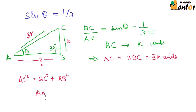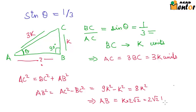So here we don't know the value of AB, so we can write AB square as AC square minus BC square, that is nothing but 9k square minus k square or equal to 8k square. Hence AB would be equal to k times 2 root 2 or 2 root 2k.